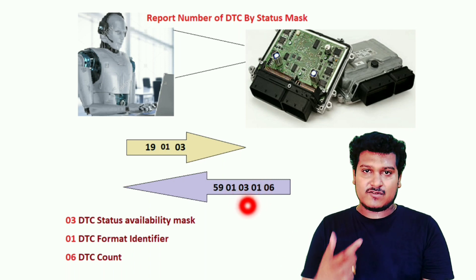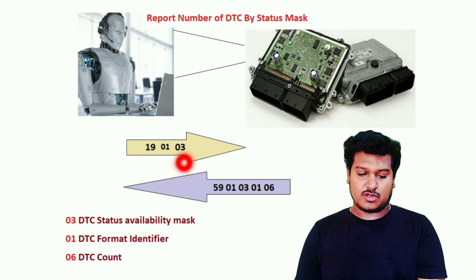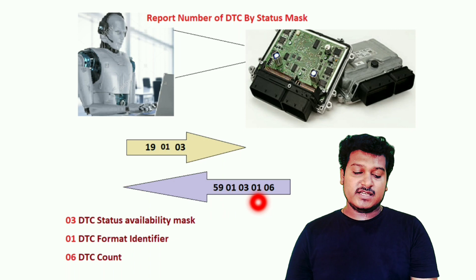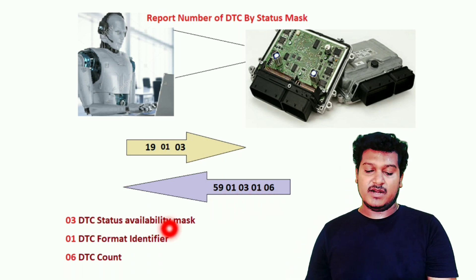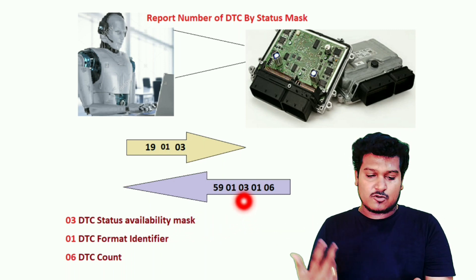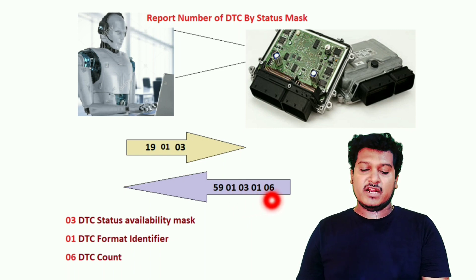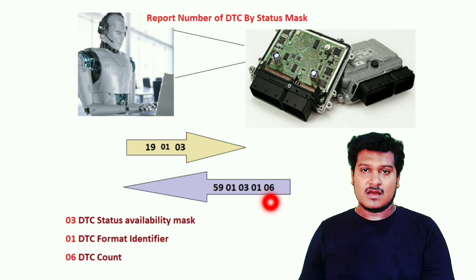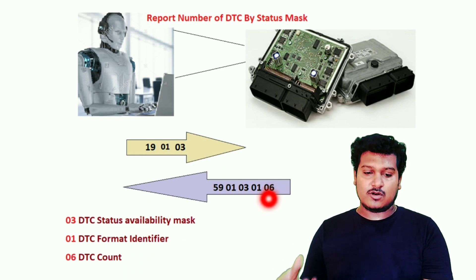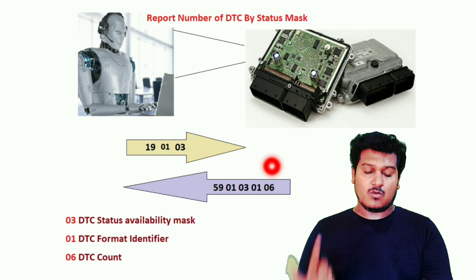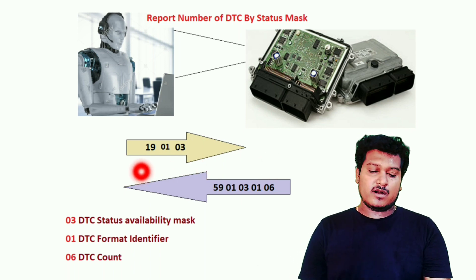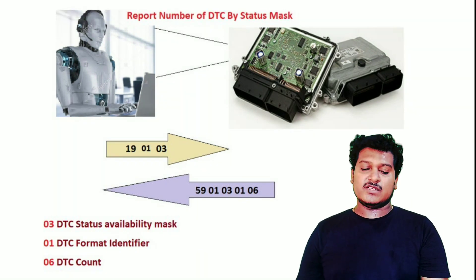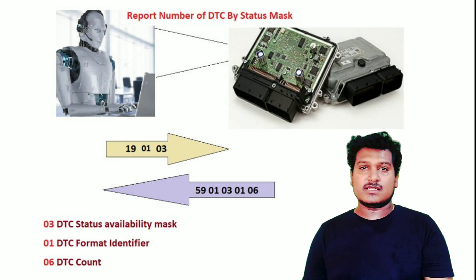Here is the request and response format. The request is 19 01 03 and the positive response is 59 01 03. The 0x40 offset is added to the service ID for a positive response. 0x01 is the sub-function we requested, and 0x03 is the DTC status mask availability. At the end of the response, 0x01 is the DTC format identifier and 0x06 is the DTC count — meaning six DTCs are currently stored in this ECU.